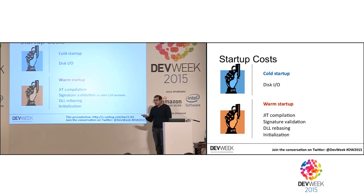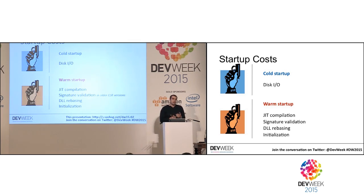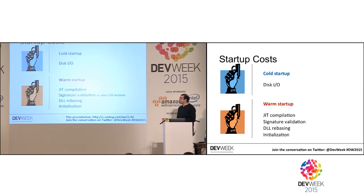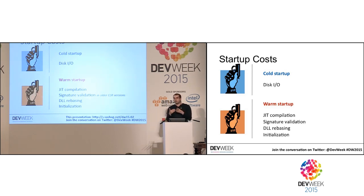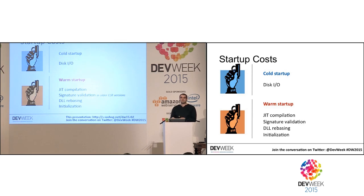Warm startup is usually dominated by just-in-time compilation — your application launches and the code has to be compiled. .NET code is compiled in two stages and part of the compilation happens at runtime, so that's part of the startup phase. For older CLR versions there's also signature validation for strong-named assemblies, though this is no longer performed for full trust. There's also DLL rebasing when multiple libraries want to be loaded at the same memory address, which is less of an issue for .NET applications. And finally there's initialization — reading from the database, initializing in-memory collections, creating your UI.